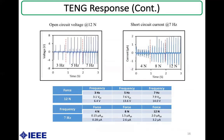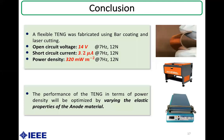It is also noted that we achieved 14 V open circuit voltage when 12 newtons was applied at 7 Hz. The short circuit current was investigated by varying the force from 4 newtons to 12 newtons at 7 Hz. The current response is directly proportional to the applied force, and the maximum short circuit current of 3.2 microamperes was measured at 12 newtons. At 7 Hz and 12 newtons, the open circuit voltage is 14 V, the short circuit current is 3.2 μA, and the power density is 320 microwatts per square meter.